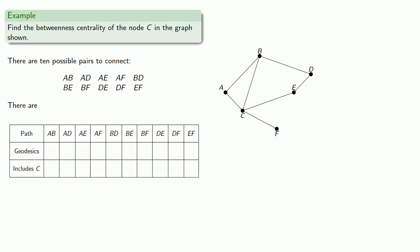So from A to B, there's only one shortest path, so that will go in our shortest path column, and C isn't on it. Likewise, from A to D, there's only one shortest path and C isn't on it. Between A and E, there is a shortest path, and C is on that shortest path.